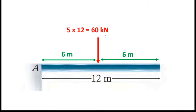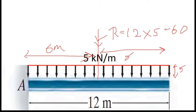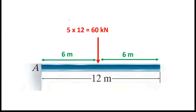We also have to find the acting point. For a uniformly distributed load, the acting point is at the middle of the distributed load. Since the beam length is 12 meters, this load acts at the middle, so this length is 6 meters and this length is 6 meters. The distance between point A and this resultant force is 6 meters.